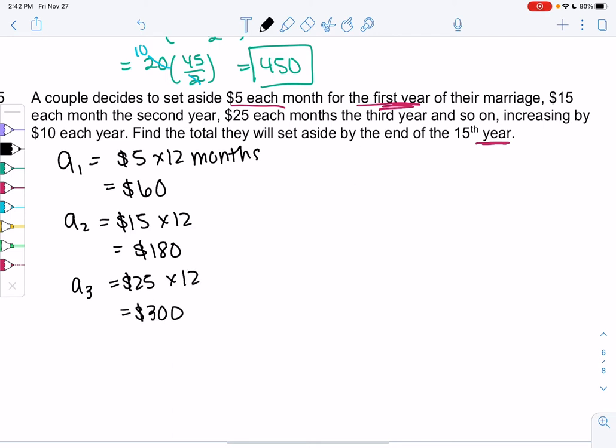And I don't want to find every single year. You're welcome to. But again, the shortcut formula will make this easier. So this is arithmetic because they're increasing by a dollar amount.